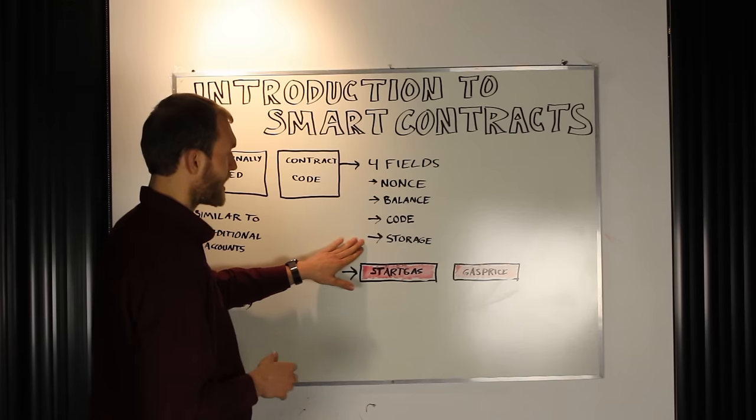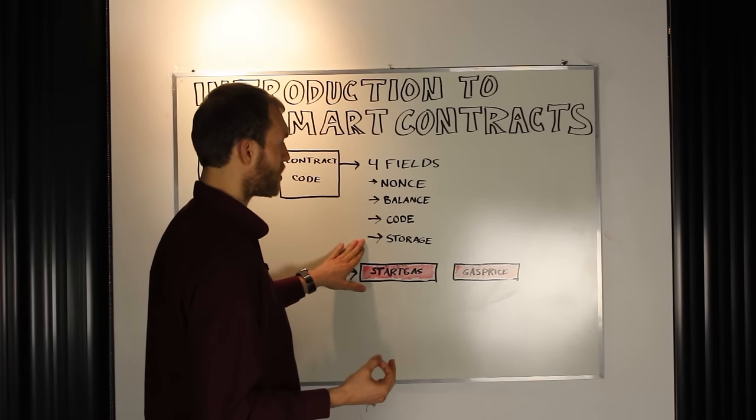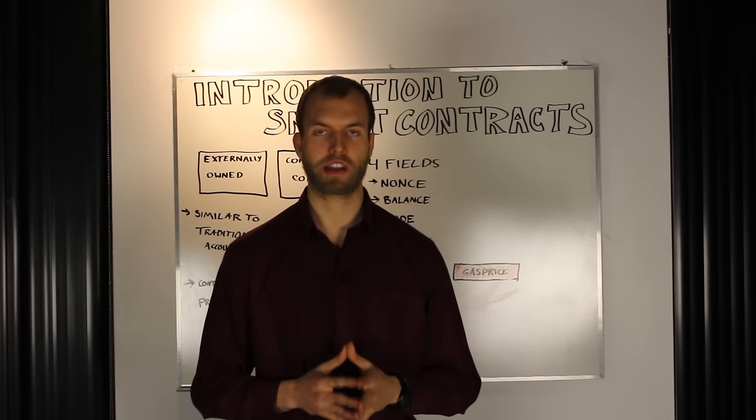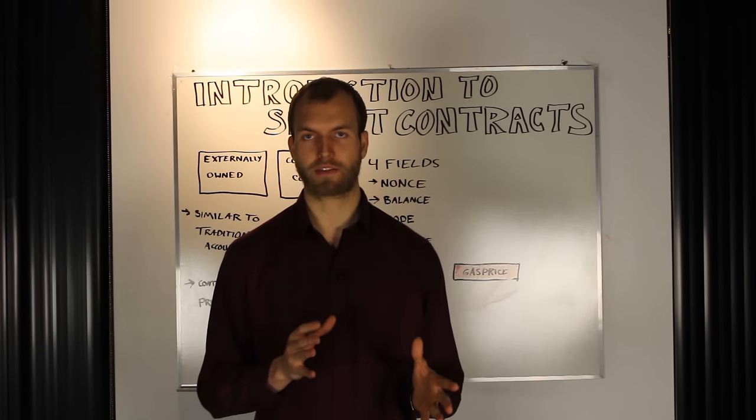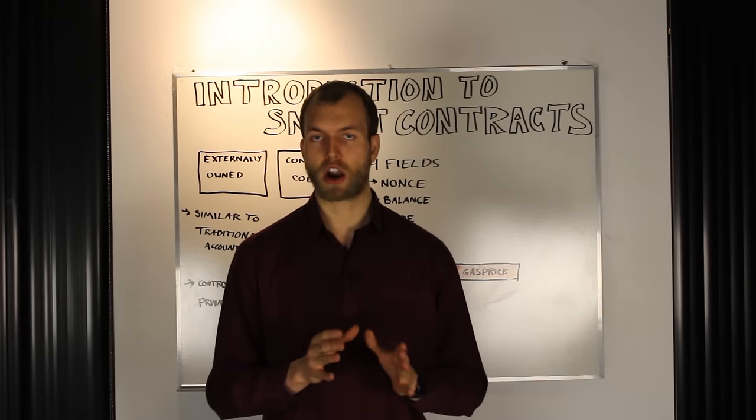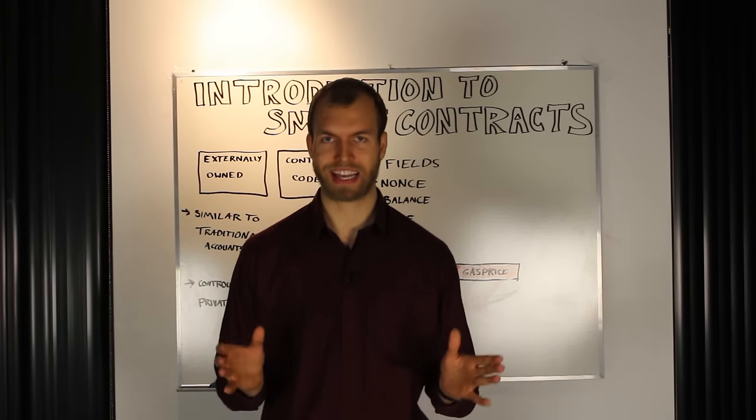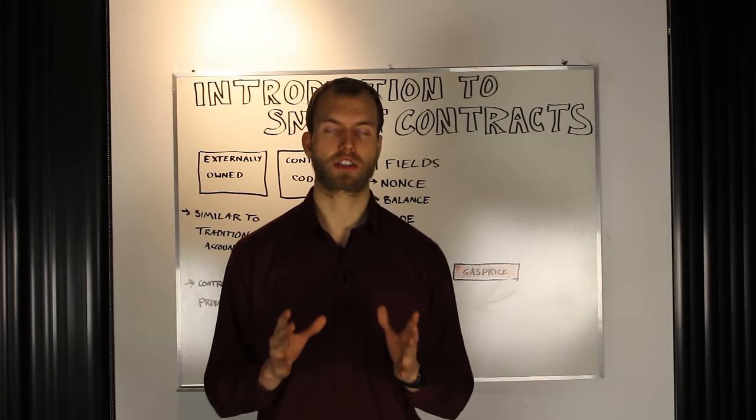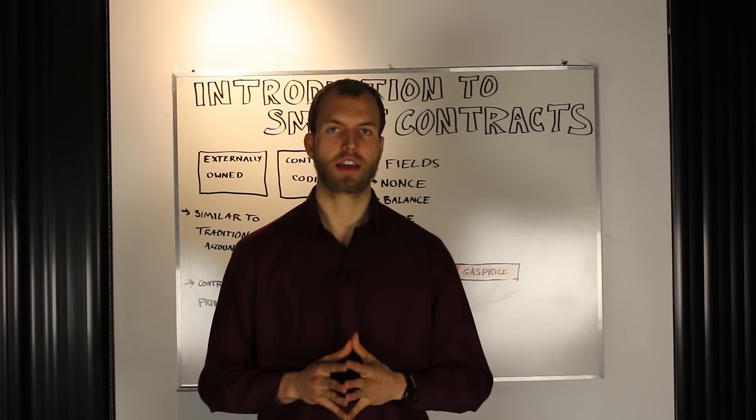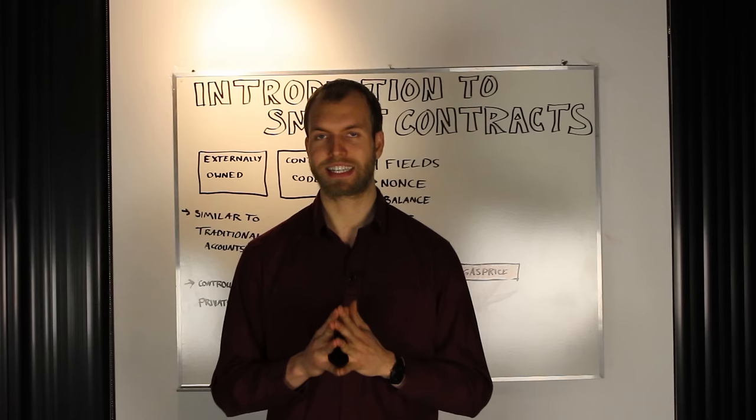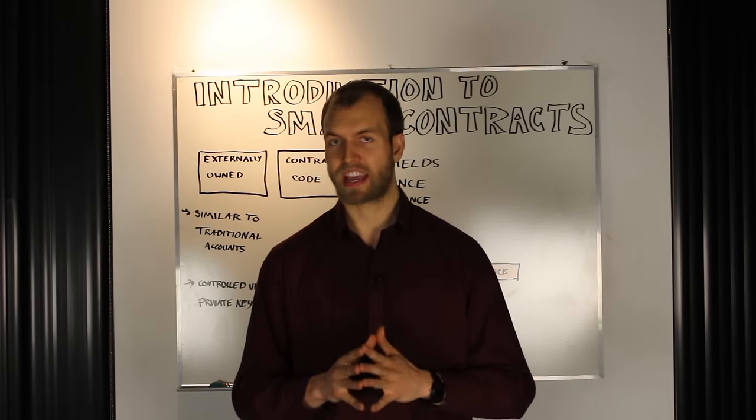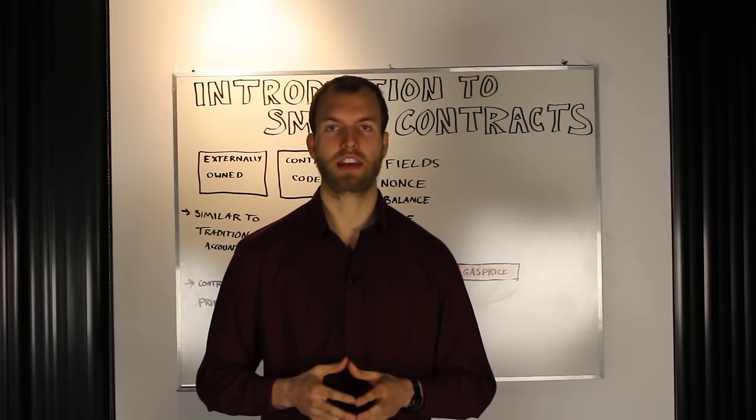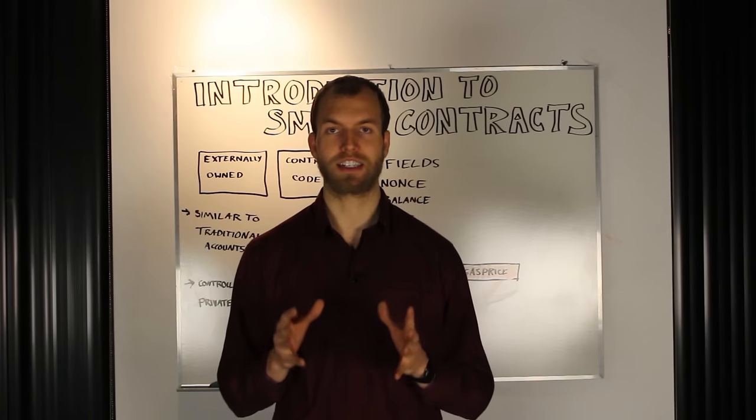Finally, there is an optional field for data storage. Depending on what type of contract you're creating, this optional data field is an arbitrary array of any length of data that can be sent and stored alongside the smart contract. It's worth noting that this data storage, because it can be any length, comes at a higher cost if the data set is larger.